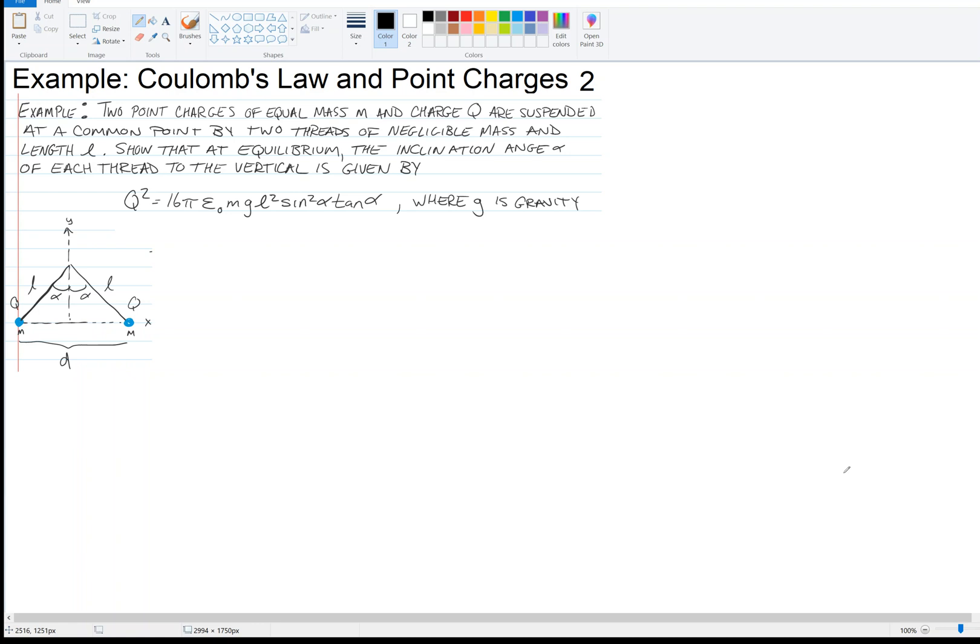Given two point charges of equal mass M and charge Q that are suspended at a common point by two threads of negligible mass and length L, show that at equilibrium the inclination angle alpha of each thread to the vertical is given by this relationship which relates Q the charge with mass, gravity, alpha, and the length of the thread.